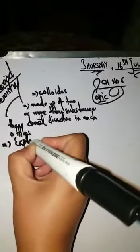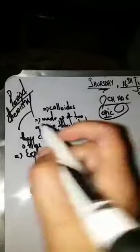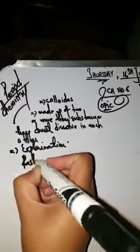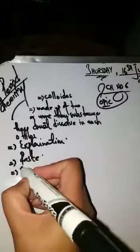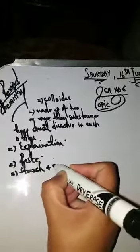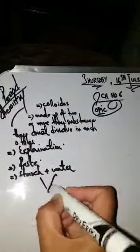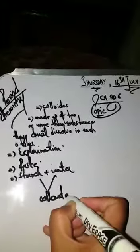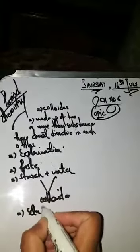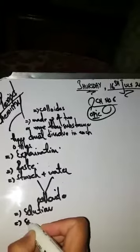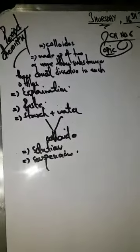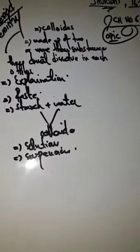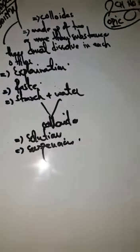When you mix starch with water, a paste is formed. This paste is neither a solution nor a suspension. When I mix starch with water, it forms a colloid. Its properties are not like a solution and not like a suspension — neither like suspension nor like solution. That type of mixture is called a colloidal solution.